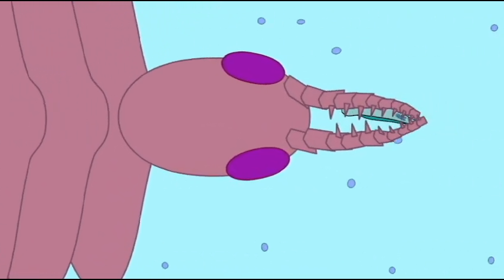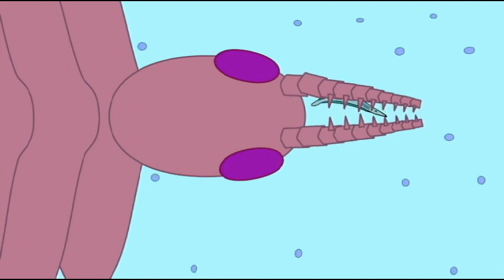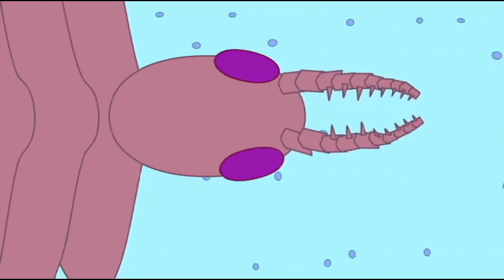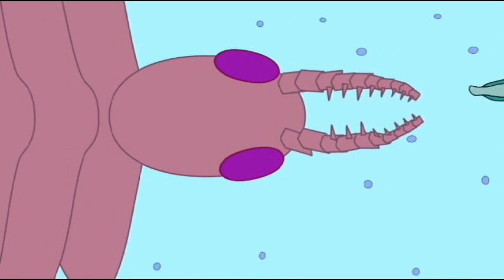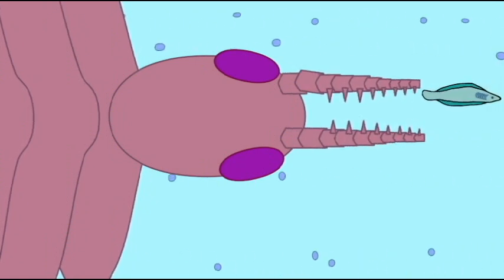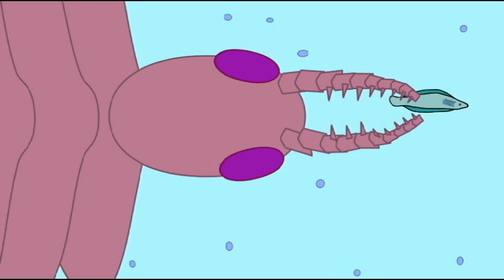It is thought that they preyed on trilobites, perhaps using their arms to bend the trilobite exoskeleton so that it ripped. One anomalocaridid is known to have survived into the lower Devonian.